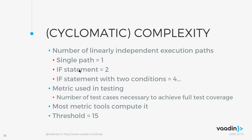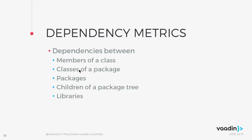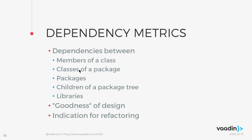The next metrics are the dependency metrics. You can look at dependencies between members of classes, packages, children of a package tree, and libraries. These will tell you about how good your design is and whether you should take a second look at your code to see what can be changed to make it easier to read and easier to use for others.